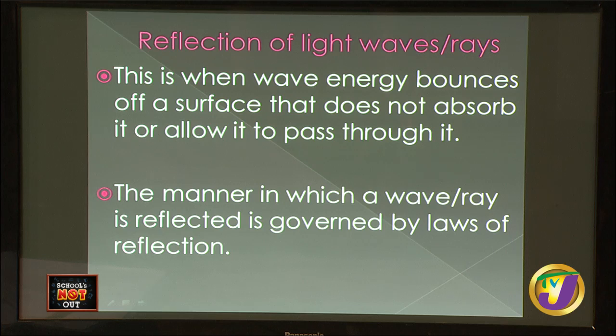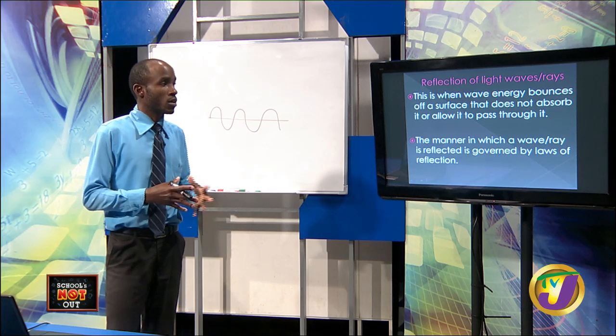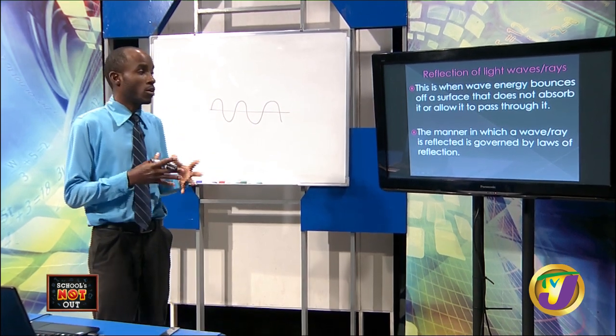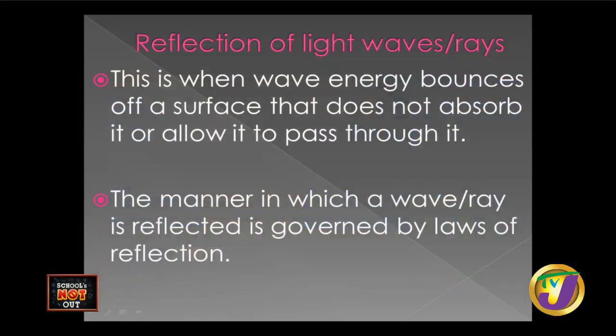Now let's look at reflection. This is where wave energy bounces off a surface that does not absorb it or allow it to pass through. For reflection to take place: no absorption, and no passing through. The manner in which the wave or ray is reflected is governed by the laws of reflection. There are two laws. First law: the angle of incidence of a wave or ray is equal to the angle of reflection.